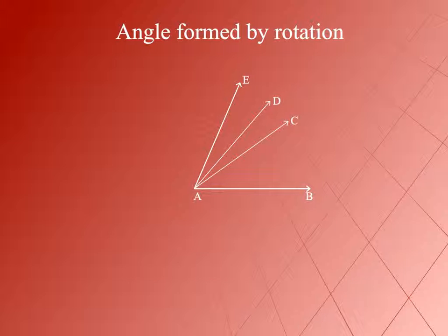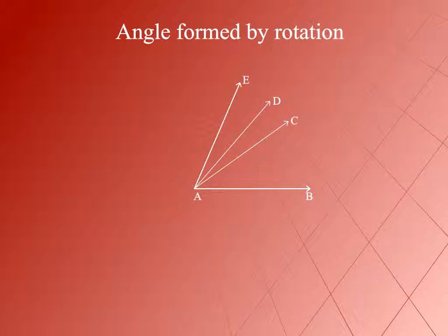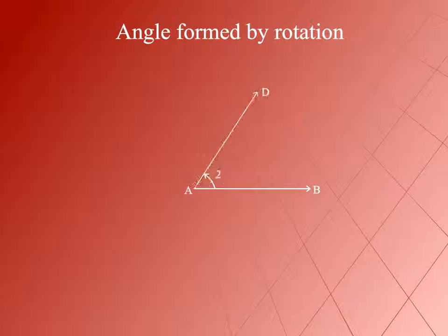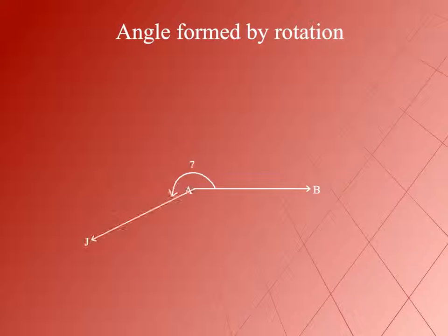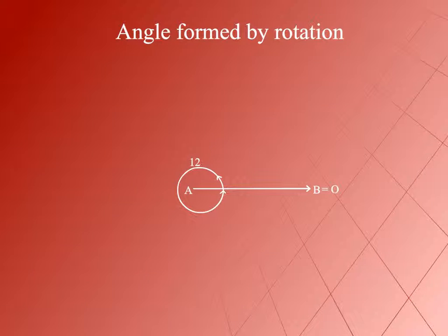For example, angle EAB is greater than angle DAB, and angle DAB is greater than angle CAB. At a certain time, the ray will complete its full rotation and re-attain its original position AB. We observe that as much as the ray rotates, it forms a greater angle with its original position.